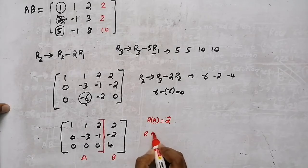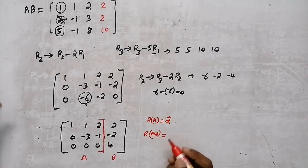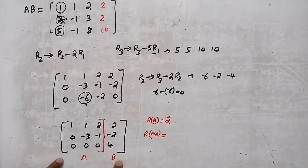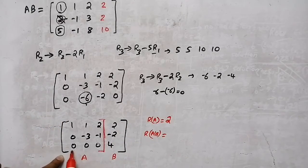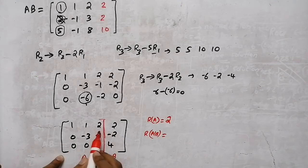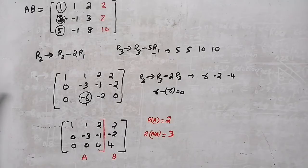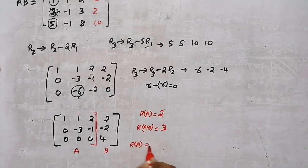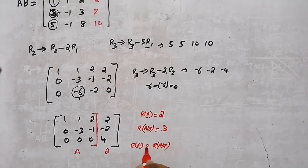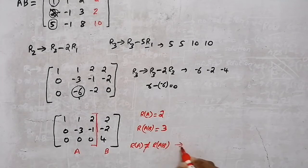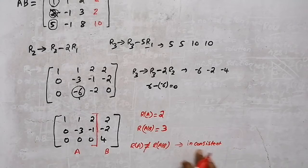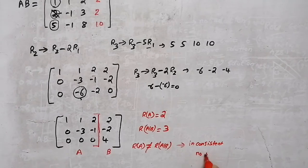Now we find the rank of the augmented matrix A|B. There are non-zero rows here, here, and here. If rank of A does not equal rank of A|B, then the system is inconsistent — no solution.